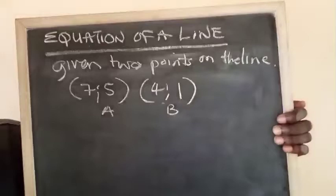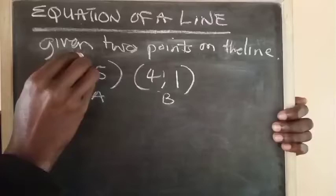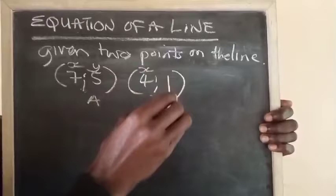We want to get the equation of the line. In this bracket, our x is 7, our y is 5. In this bracket, our x is 4, our y is 1.